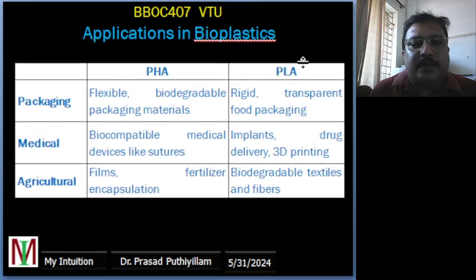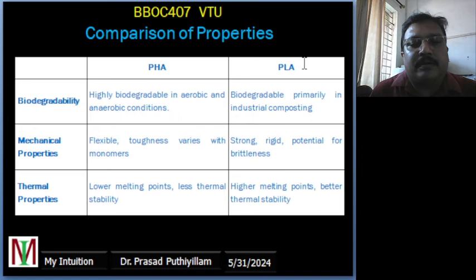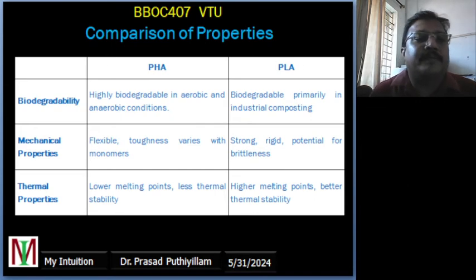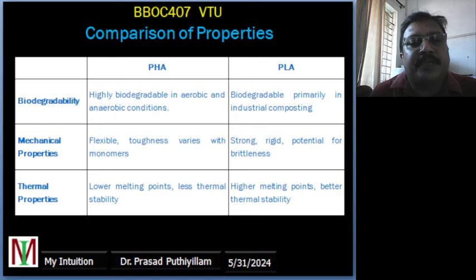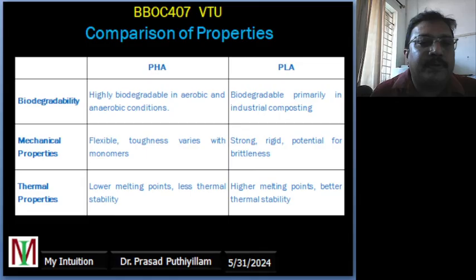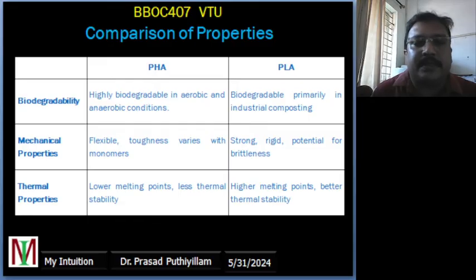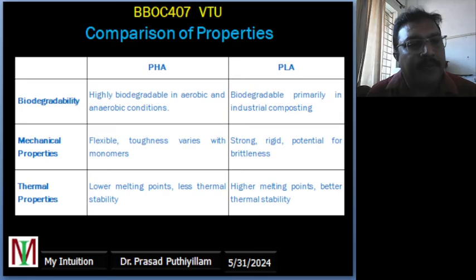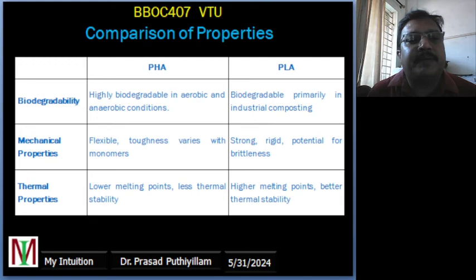Environmental impact: the environmental impact of polyhydroxyalkanoates is generally lower, especially when produced from waste materials. For example, PHA can be made from agricultural waste, reducing its overall environmental footprint. Whereas PLA production can have a higher environmental impact due to the agricultural inputs required for its feedstock such as corn, and the cultivation and processing of these crops contributes to PLA's environmental footprint.